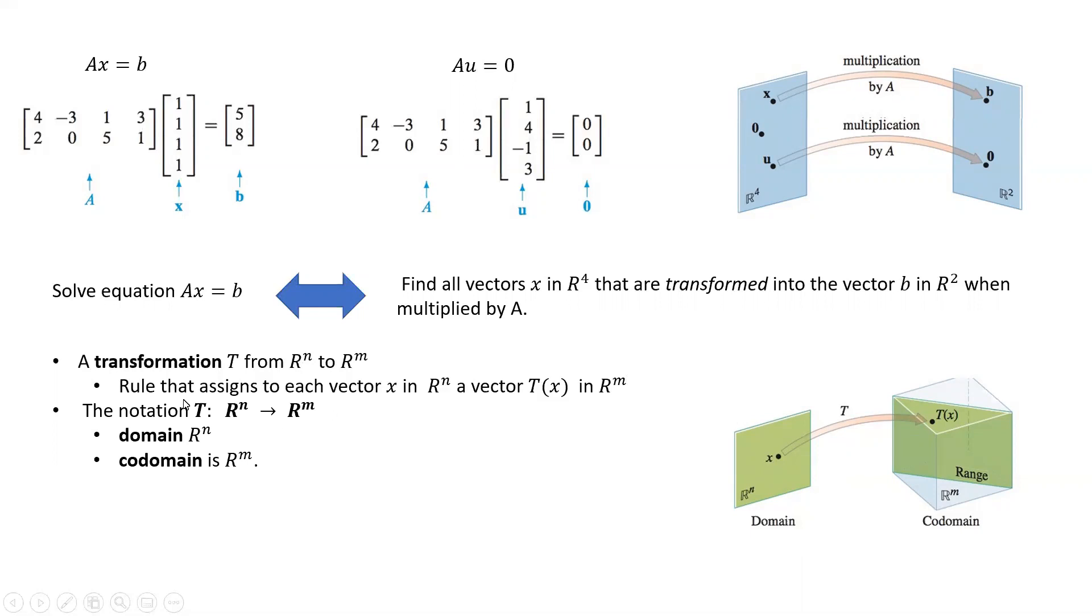We need proper notation. When transforming a vector, we usually denote the transformation by the letter T, then specify the vector space we're transforming from—in this case R^n—and after an arrow we put the dimension of the space we're transforming into.